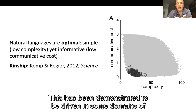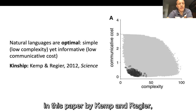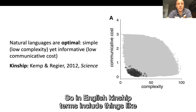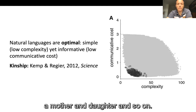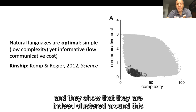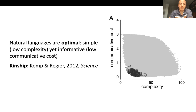This has been demonstrated to be true in some domains of natural language — for instance, in a paper by Kemp and Regier looking at kinship systems. A kinship system is the vocabulary a language provides for talking about relationships to kin — in English, kinship terms include things like mother, aunt, daughter, and so on. Kemp and Regier measure the complexity and communicative cost of natural language kinship systems and show they are clustered around this optimal frontier of low complexity and low communicative cost.